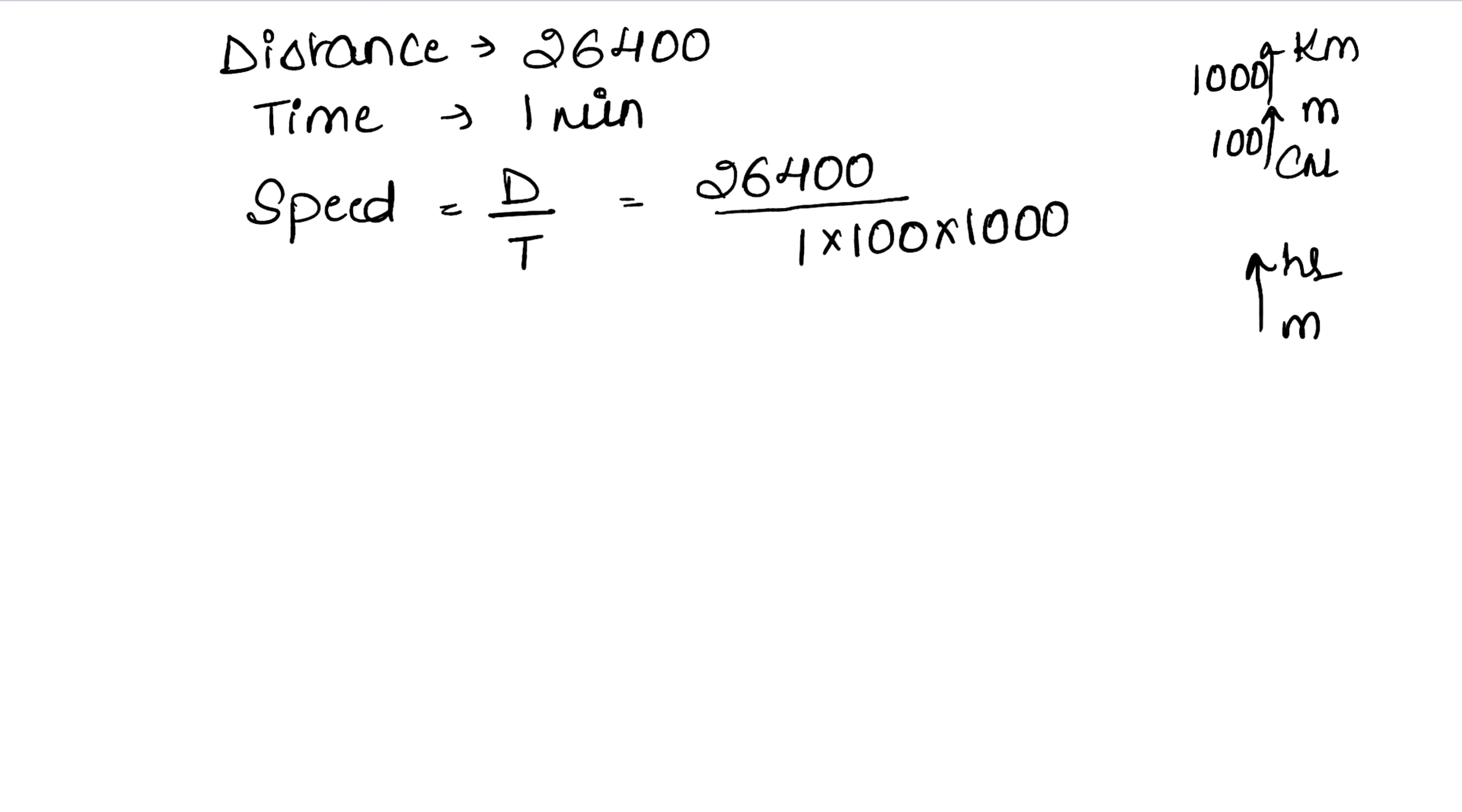So we have 100 into 1000 in the denominator. We also need to convert from minutes to hours, so we multiply by 60 because 1 hour has 60 minutes. Now we solve: 3 zeros cancel. 6 times 4 is 24, carry 2. 6 times 6 is 36, plus 2 is 38. 6 times 2 is 12, plus 3 is 15. This gives 15,840 upon 100, which equals 15.84 kilometers per hour.